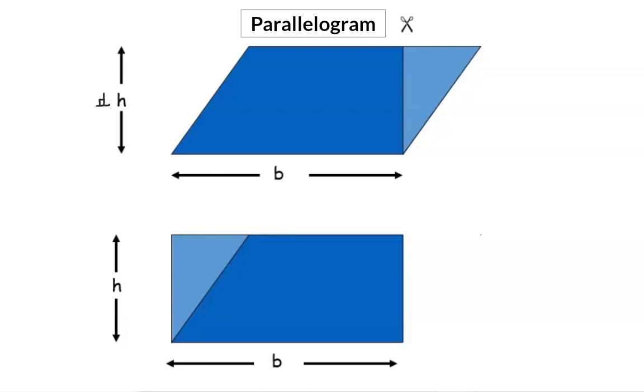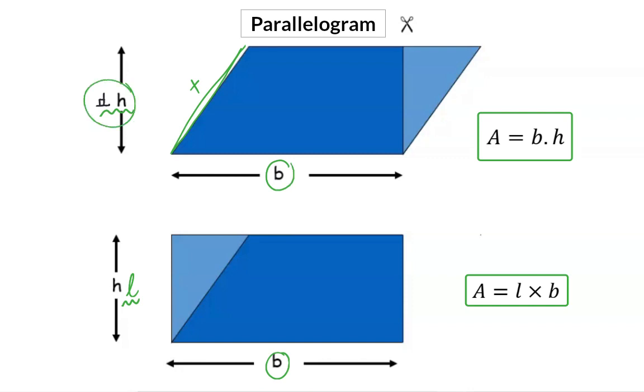For a rectangle, we know that the area is calculated by saying length times breadth. And now it is important to see that the measurement that coincides with the length of the rectangle is the perpendicular height of the parallelogram and not the length of the side. So for the parallelogram, the area is base times perpendicular height.